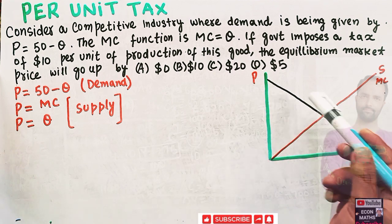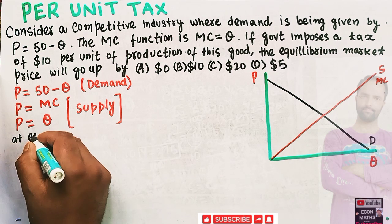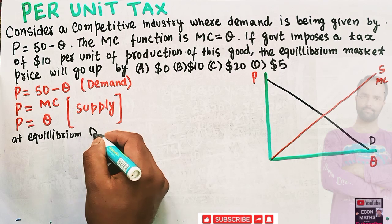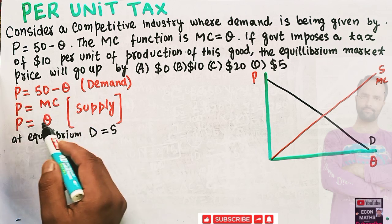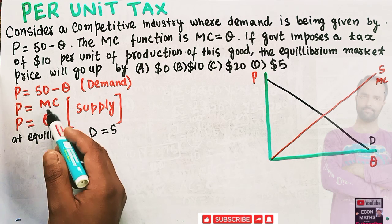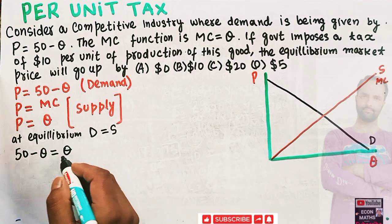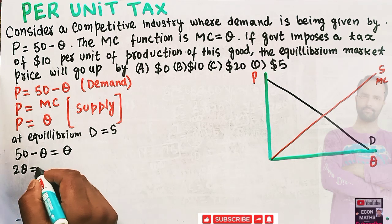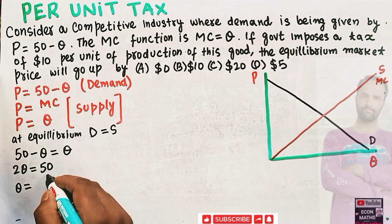Before the imposition of per unit tax, equilibrium occurs where demand equals supply. Our demand function is P = 50 minus Q and our supply function is P = Q. Since both left-hand sides are P, we can equate the right-hand sides: 50 minus Q = Q. Transposing, we get 2Q = 50, which implies Q = 50 divided by 2.